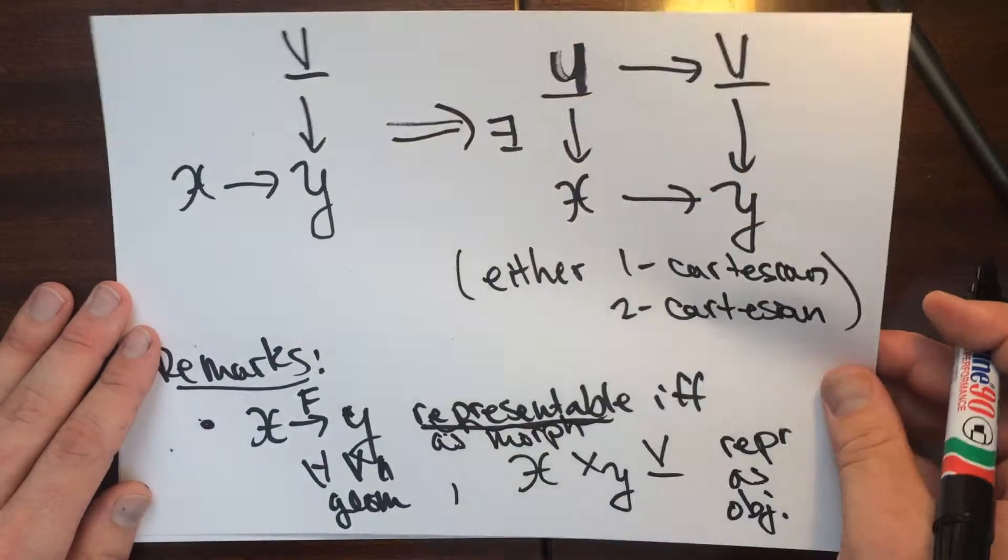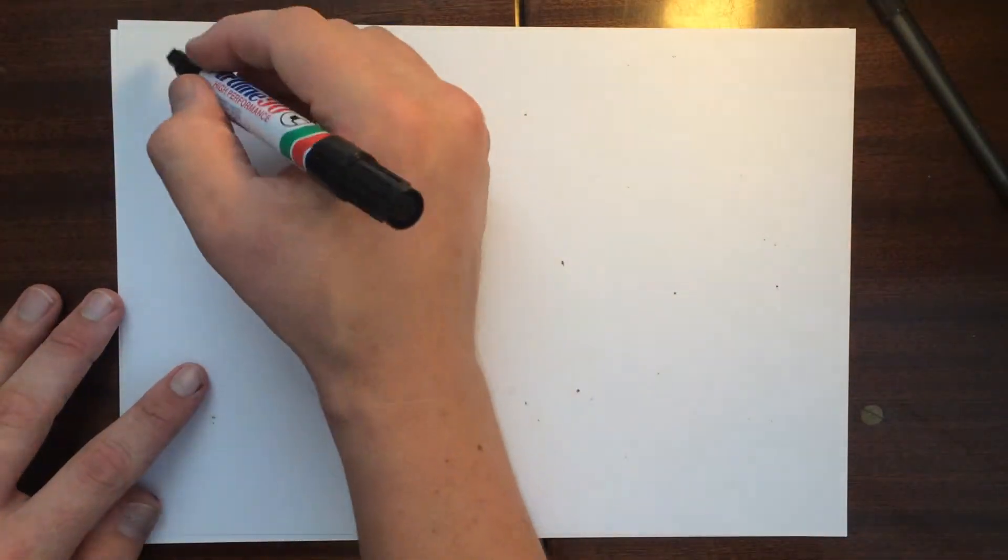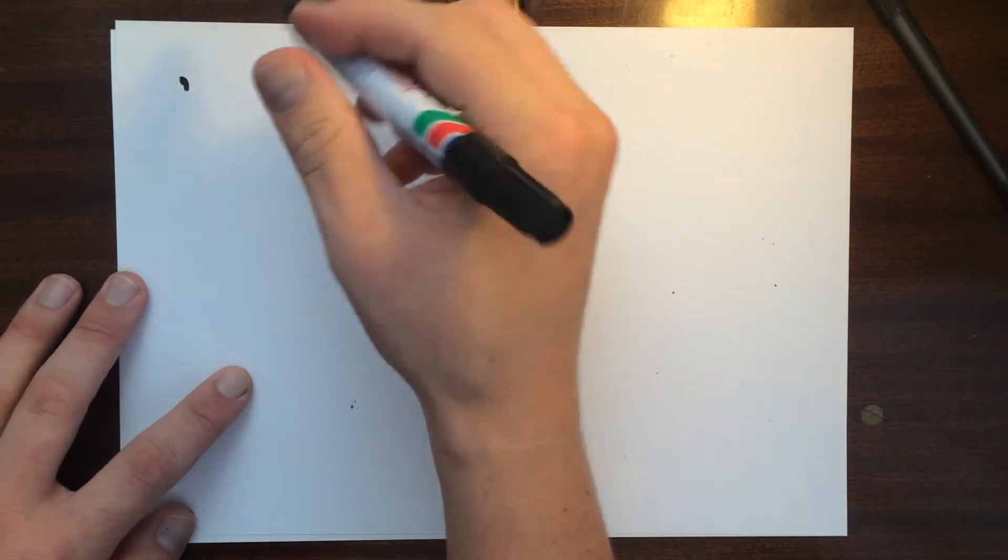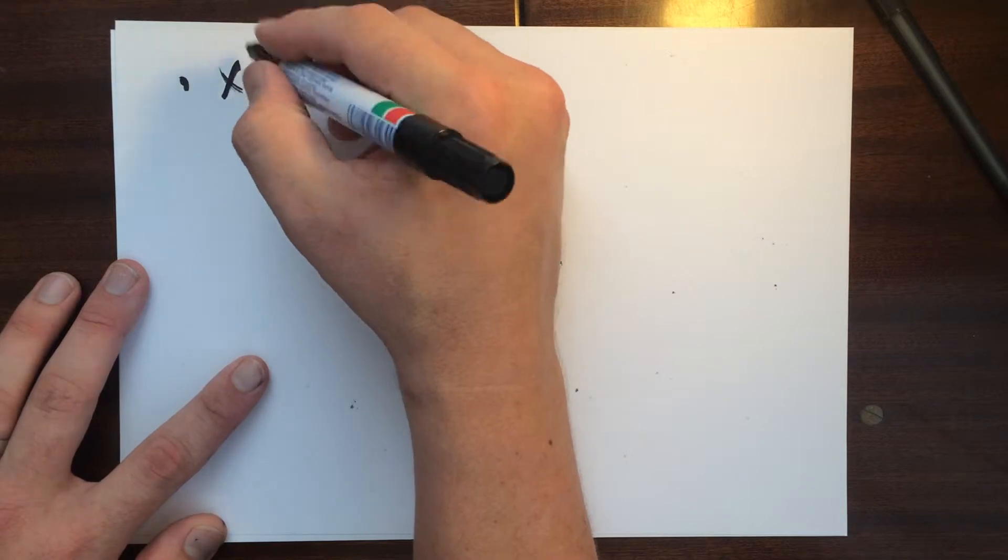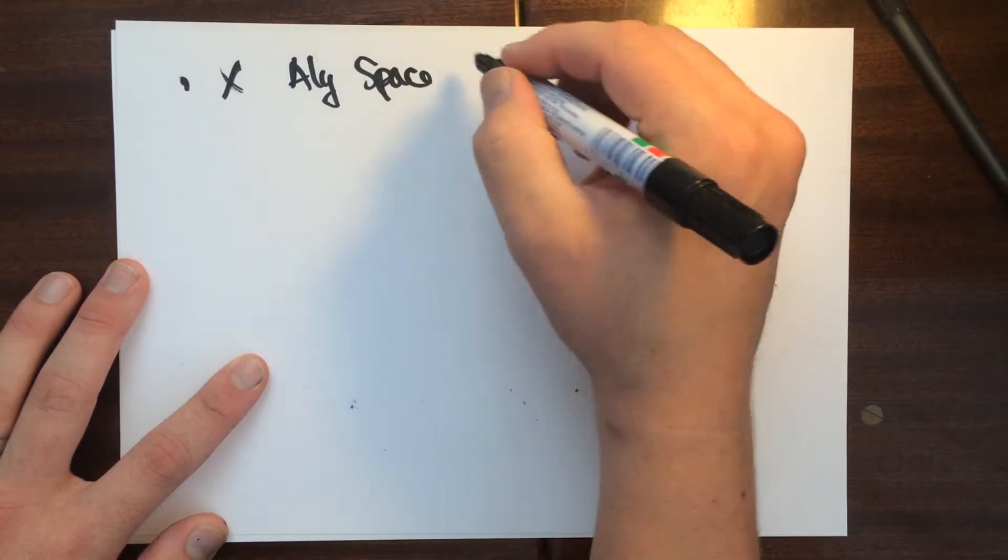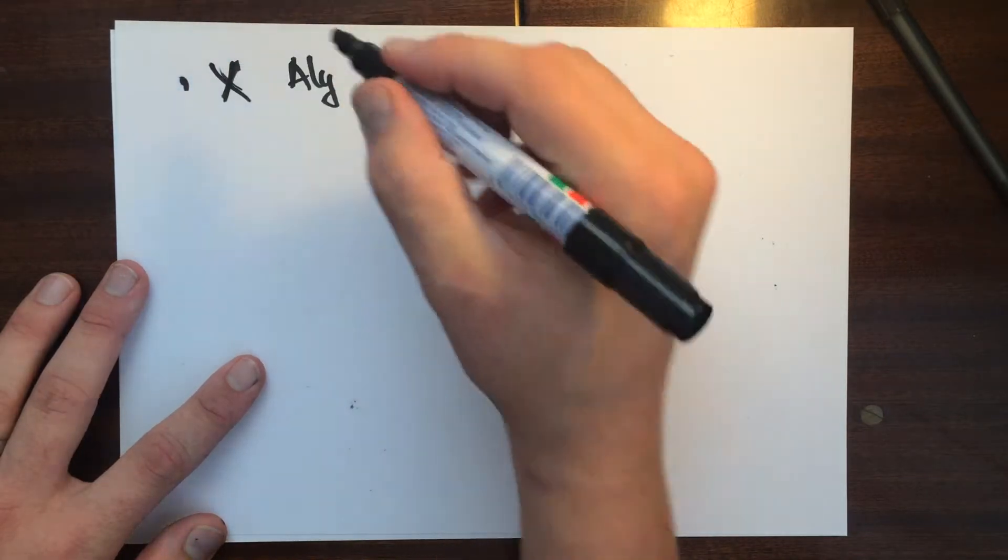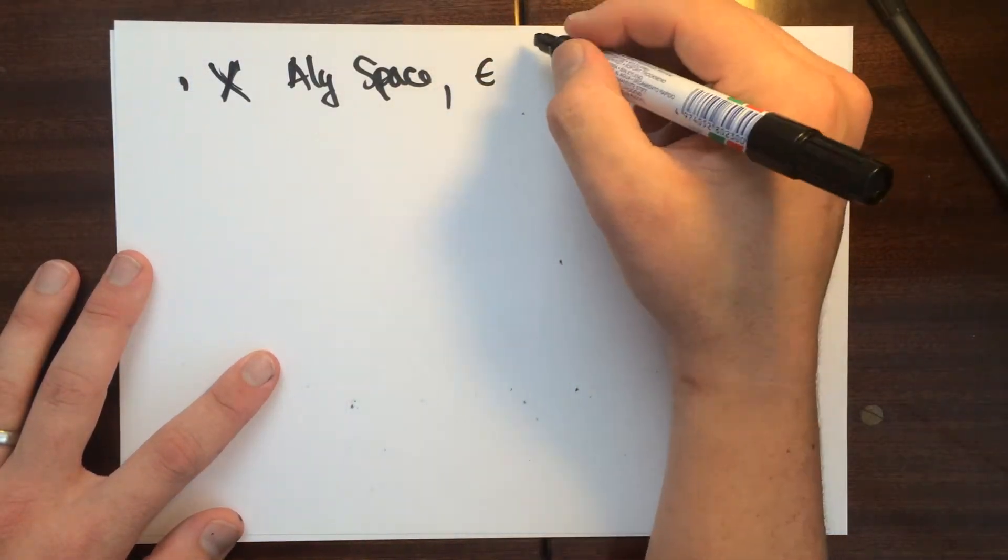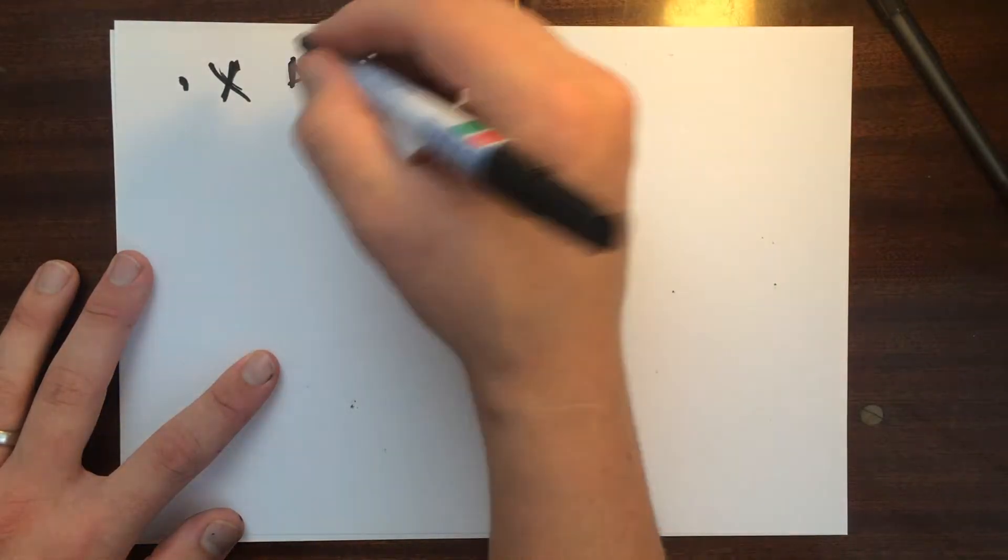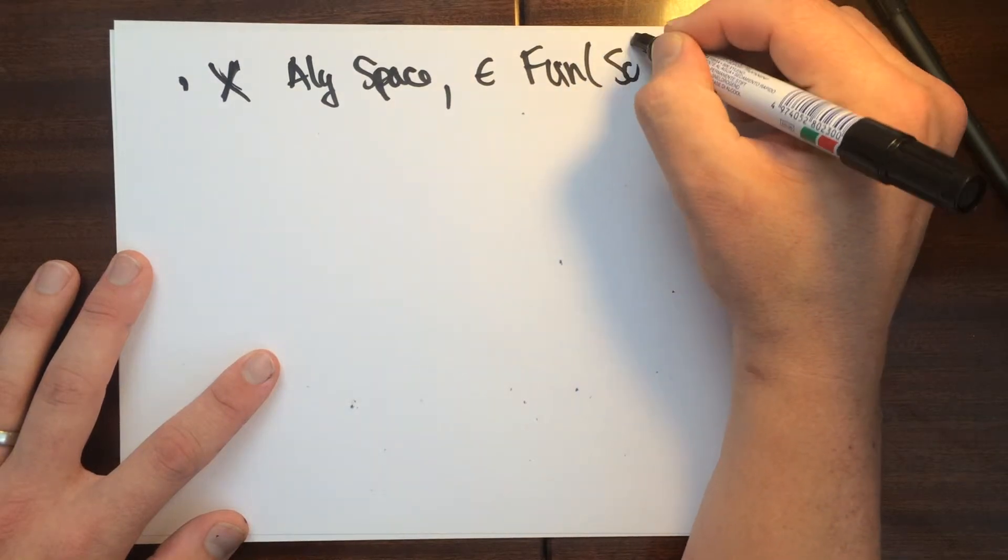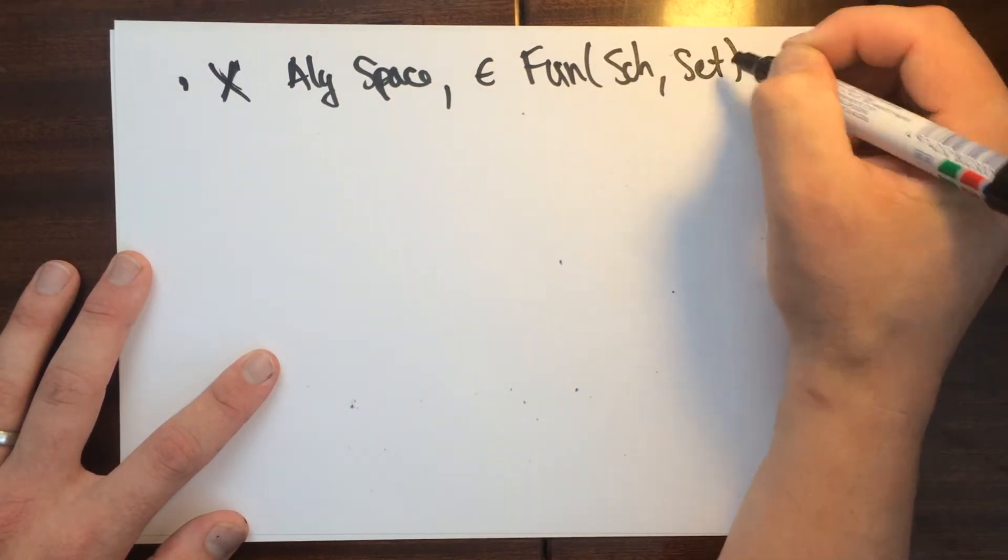I've been saying geometric object because of the second remark, remark number two, is that if you have, if X is an algebraic space, one can consider then the category. So this is in, so this is again, let's say, this is again, this is a functor from the category of schemes to sets here.